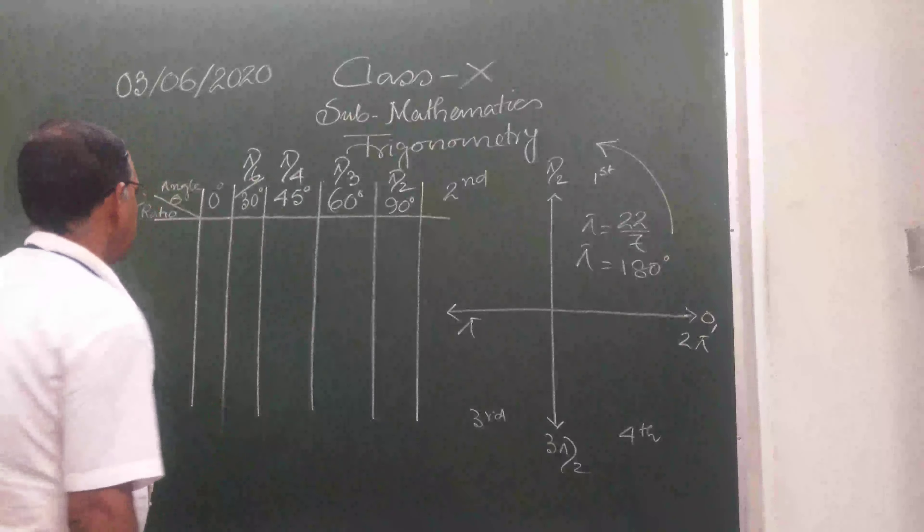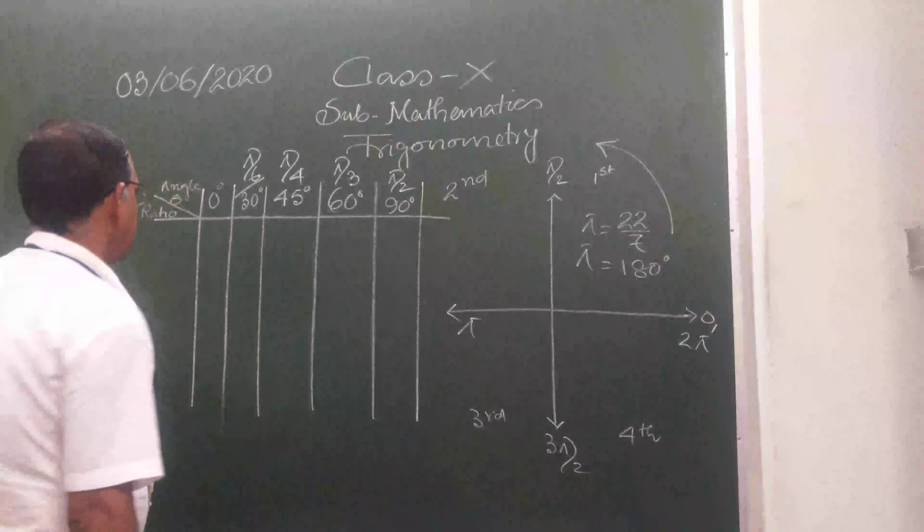Writing the ratios one by one: first is sine θ. The values are: sin 0° = 0, sin 30° = 1/2, sin 45° = 1/√2, sin 60° = √3/2, and sin 90° = 1. Remember these sine values — all the others can be obtained automatically.